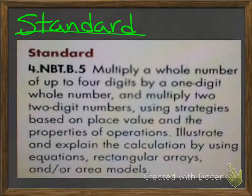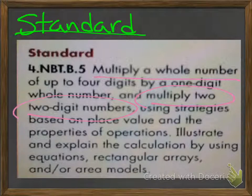Our standard is: multiply a whole number of up to 4 digits by a 1-digit whole number, and multiply two 2-digit numbers using strategies based on place value and the properties of operations. We can illustrate and explain the calculation by using equations, rectangular arrays, and/or area models.